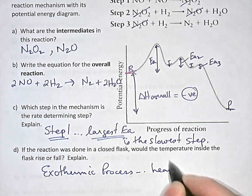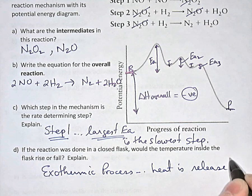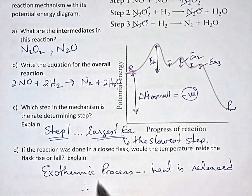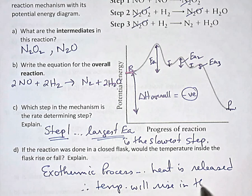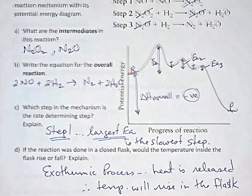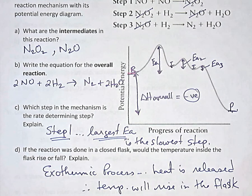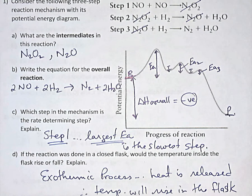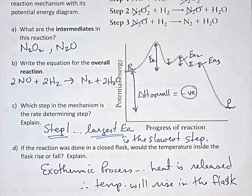Since heat is released and the products have less energy than the reactants, the temperature will rise in the flask. The chemical reaction inside is releasing heat, and that heat causes the temperature inside the flask to go up. It's not that heat is being lost from the flask — it's that the reaction inside the flask is producing heat, raising the temperature inside.